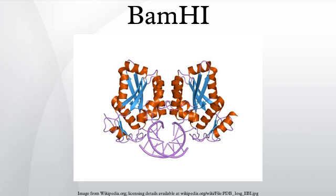As discussed above, the L and A subunits bind in a crossover manner, whereby the A subunit of BamHI contacts the left DNA half-site of the recognition sequence. The binding of each BamHI subunit is precisely the same as its symmetrical partner.